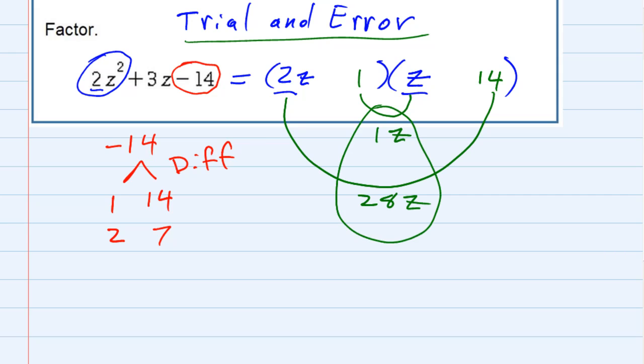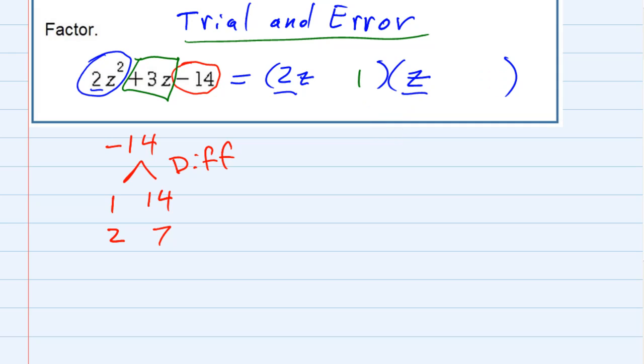But those numbers, with signs being different, have to add up to our middle term, our 3z. So we tried 1 and 14, and it didn't work, because there's no way I can change the signs and get that to add up to 3z. So what we're going to do is we're just going to go back to the drawing board. That was an error. 1 and 14 didn't work.